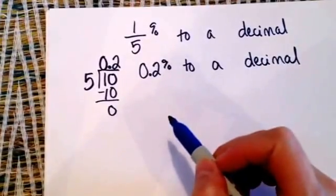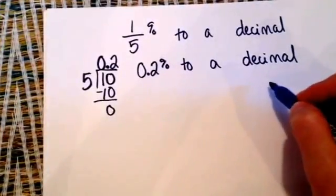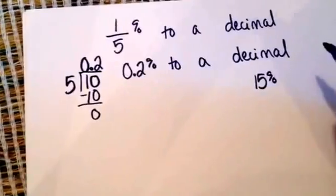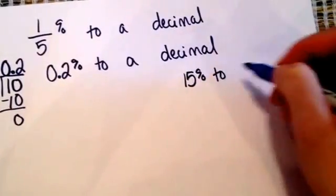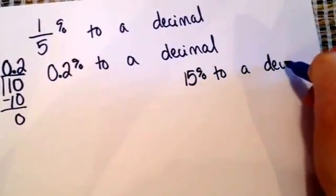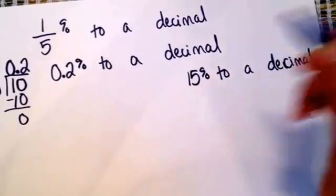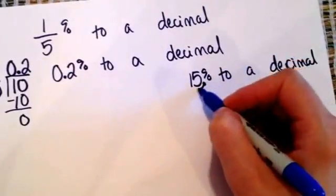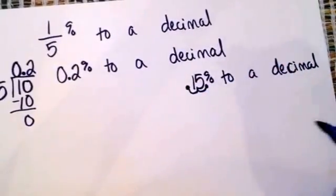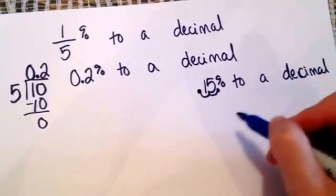So in other words, let's take an easier one. If I was saying 15% to a decimal, I would take the decimal point and move it two spaces to the left because I would be dividing by 100.